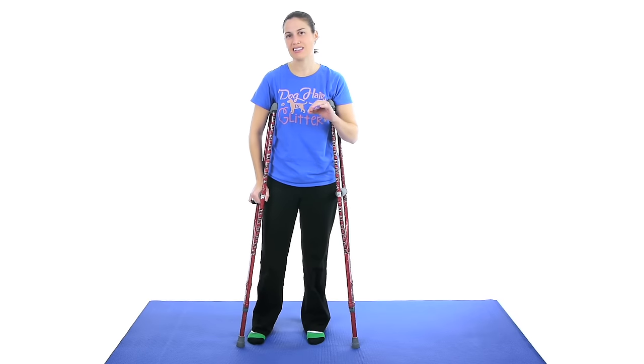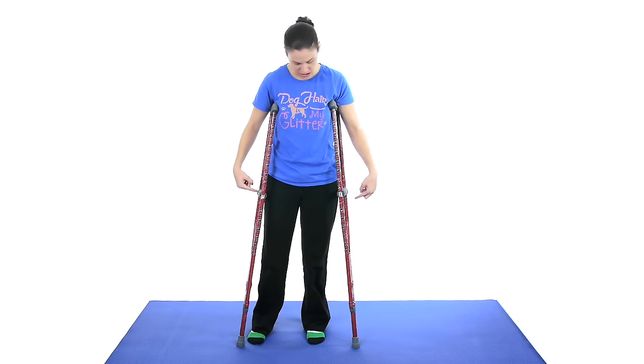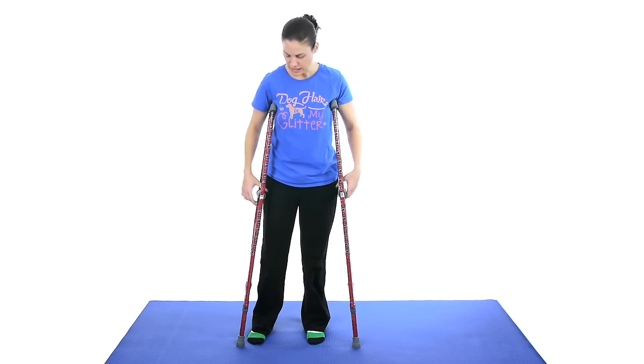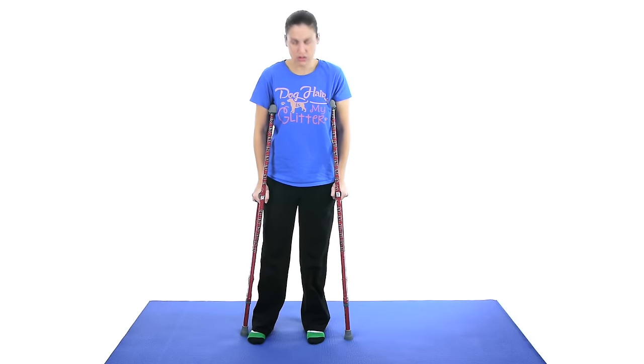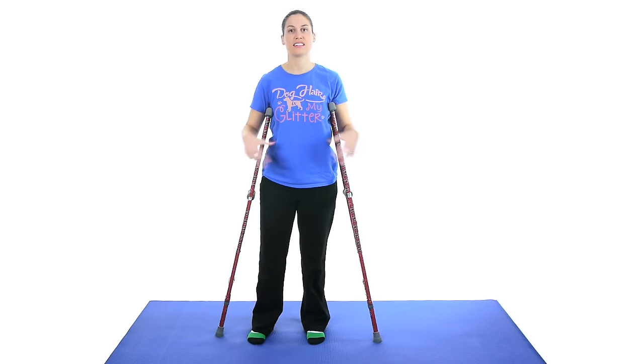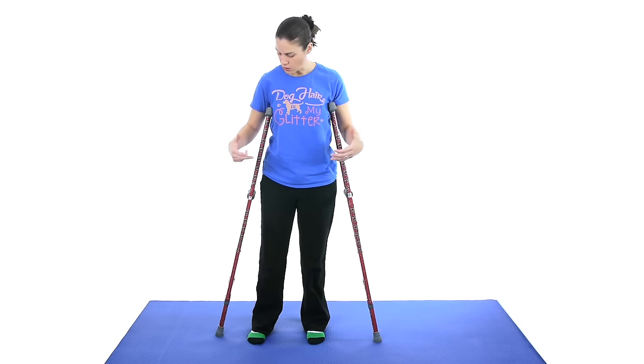You want to have just a slight bend in your elbows as well because you can move the handles, but it doesn't have to be a big bend, just a slight bend. Because when you're walking with the crutches, you don't want them super close, you want them out to the side just a little bit because that's going to give you some more stability while you're walking.